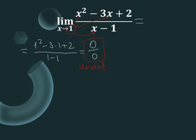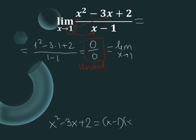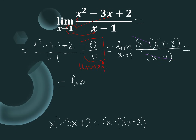We have to continue and simplify. We can use techniques like rationalizing the numerator or denominator if the limit contains radicals. For our example we will use factoring. We write limit as x approaches 1 of x squared minus 3x plus 2 over x minus 1. Factoring the numerator gives us x minus 1 times x minus 2. We can then cancel out x minus 1, leaving limit x approaches 1 of just x minus 2.